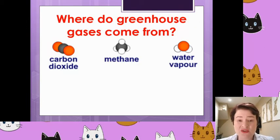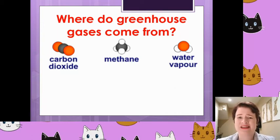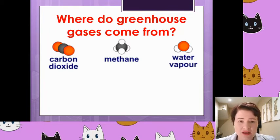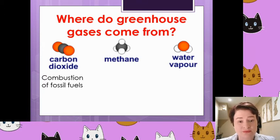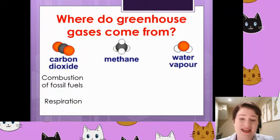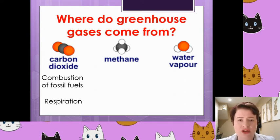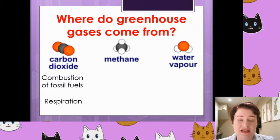So where do the greenhouse gases actually come from? Carbon dioxide — I think we know pretty quickly, as we've already done a lesson on the carbon cycle. Carbon dioxide primarily comes from the combustion of fossil fuels. In addition to that, it can be given off in respiration and in decay processes as well. But the big one is combustion of fossil fuels. All synthetic, man-made emissions of carbon dioxide are the real problem.